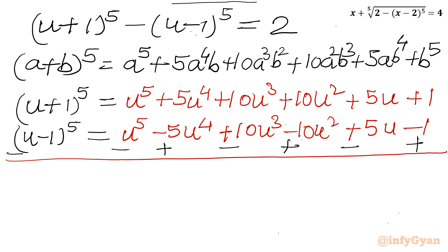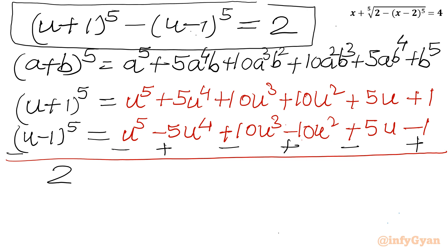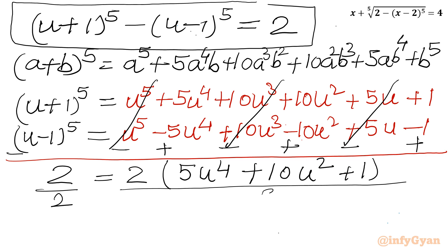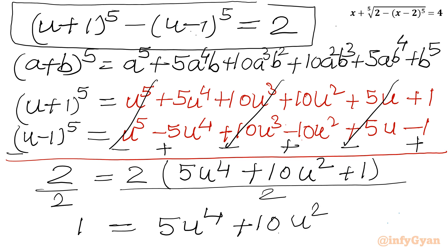The LHS equals 2. After subtracting, the even-powered terms cancel, and taking 2 as a common factor on the RHS gives: 2 equals 2 times (5u⁴ plus 10u² plus 1). Dividing both sides by 2: 1 equals 5u⁴ plus 10u² plus 1. Cancelling the 1 from both sides leaves: 5u⁴ plus 10u² equals 0.